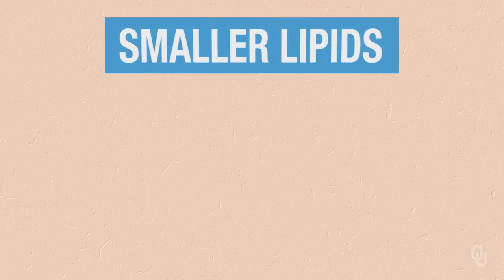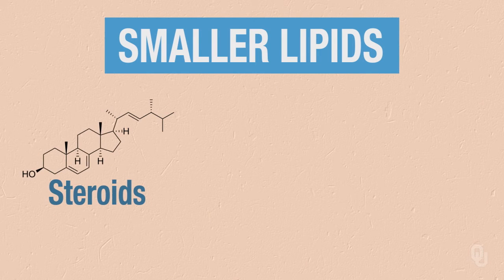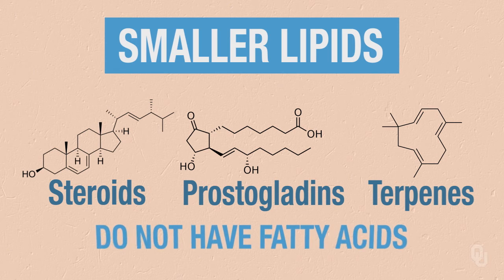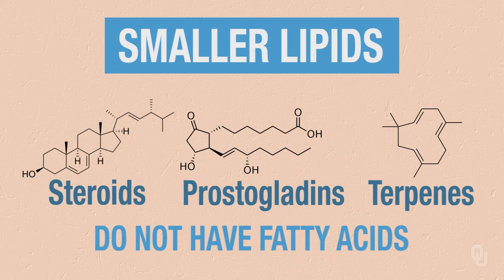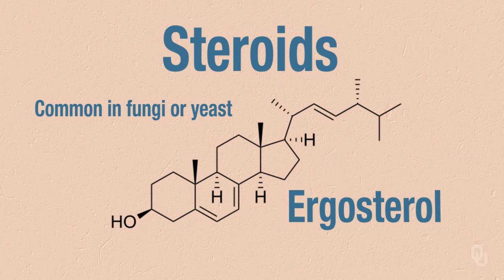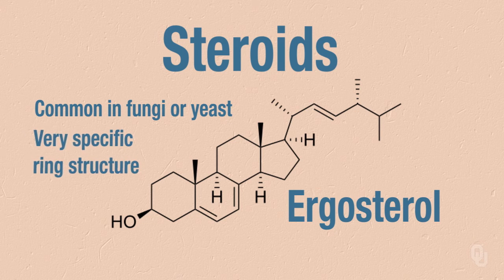Our smaller lipids, such as our steroids, prostaglandins, and terpenes, do not have fatty acids. Here is a common steroid in fungi, or yeast — ergosterol. A steroid has a very specific ring structure: three six-membered rings and a five-membered ring.